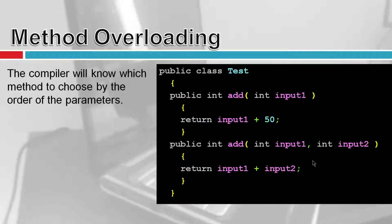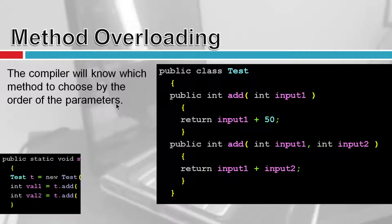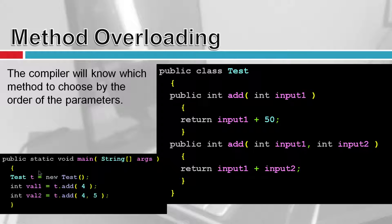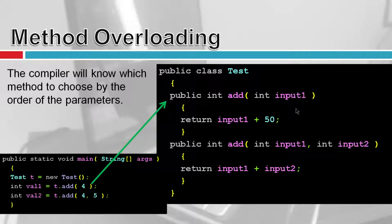The compiler will know which overloaded function to call based on what parameters you're passing. Here I'm creating a new class test and calling both functions. When I pass in one integer, the compiler calls the function that only has one integer input. When I call the add function with two parameters, it calls the two-parameter version.